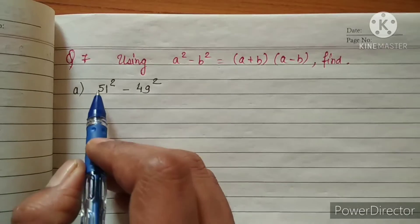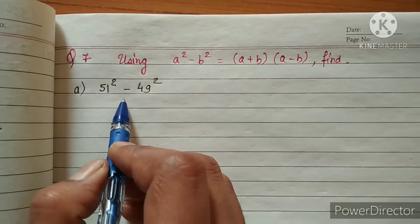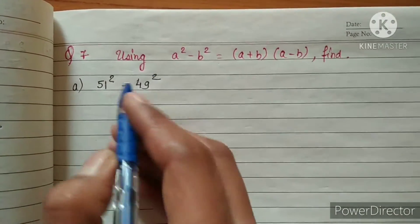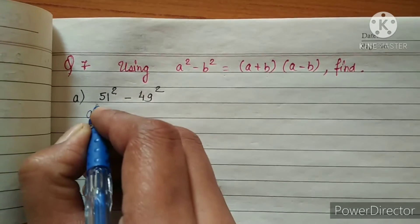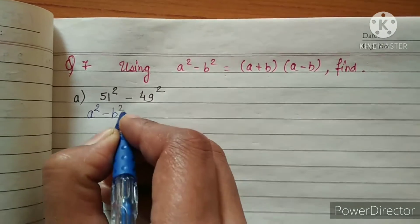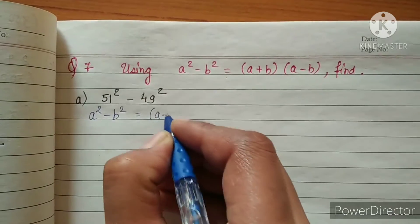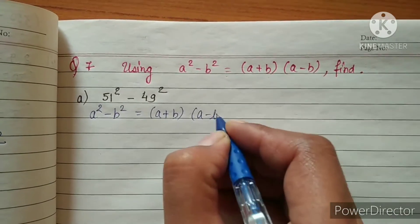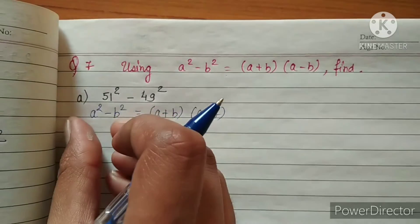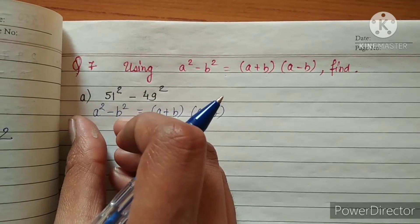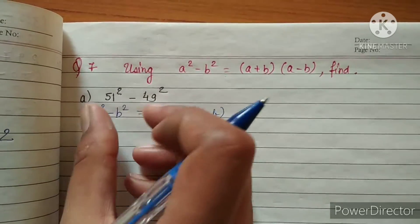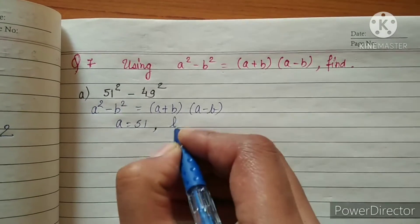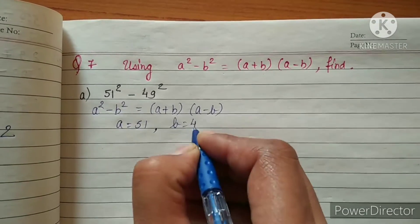The first one is 51 squared minus 49 squared. Using the identity a squared minus b squared equals a plus b multiplied by a minus b, and comparing with the question, our a is 51 and b is 49.